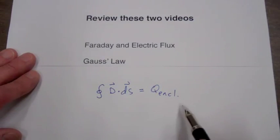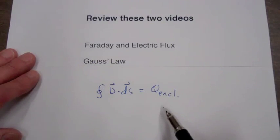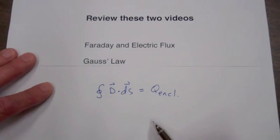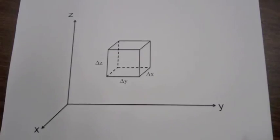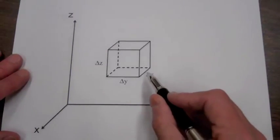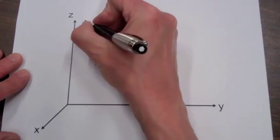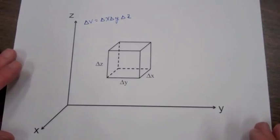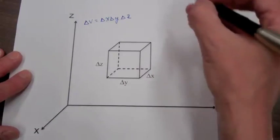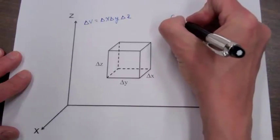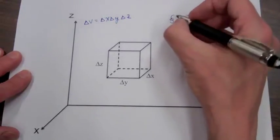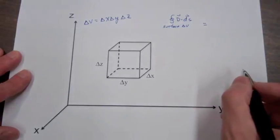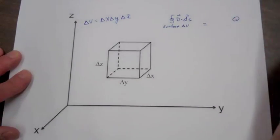We are going to apply Gauss's law here to a small differential volume element to determine the operation of divergence and find the point or differential form of Gauss's law. Here we have a small cube of sides delta x, delta y, and delta z, so the volume of this cube delta v is delta x delta y delta z. Now we are going to apply Gauss's law to this small cube, so the integral of D dot dS over the surface of the cube equals the charge enclosed in that cube, designated as Q sub delta v.